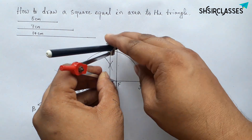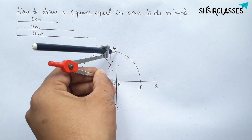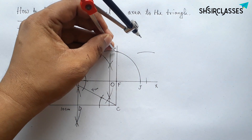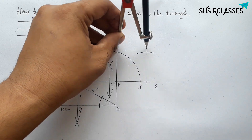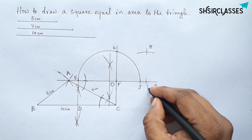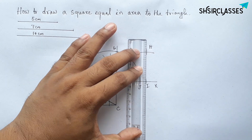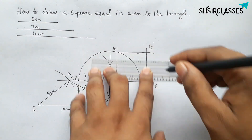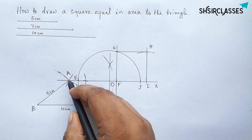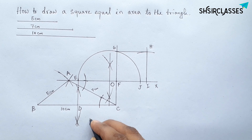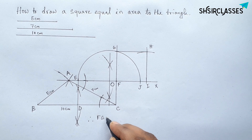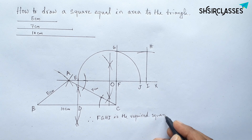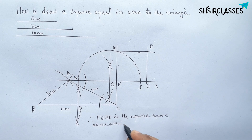Take the length FG with the compass. Place the compass on F and draw an arc, then place it on G and draw another arc, cutting to label points H and I. Join H to I, then join G to H to complete the required square FGHI. Triangle ABC and square FGHI are equal in area.